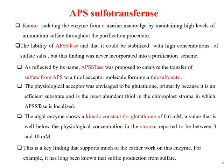APS-stase was proposed to catalyze the transfer of sulfate from APS to a thiol acceptor molecule, forming thiosulfonate. The physiological acceptor was envisaged to be glutathione, primarily because it is an efficient substrate and is the most abundant thiol in the chloroplast stroma where APS-stase is localized. The algal enzyme shows a kinetic constant for glutathione of 0.6 mM, a value well below the physiological concentration in the stroma reported to be between 3 and 10 mmol. This is a key finding supporting much of the earlier work on these enzymes.